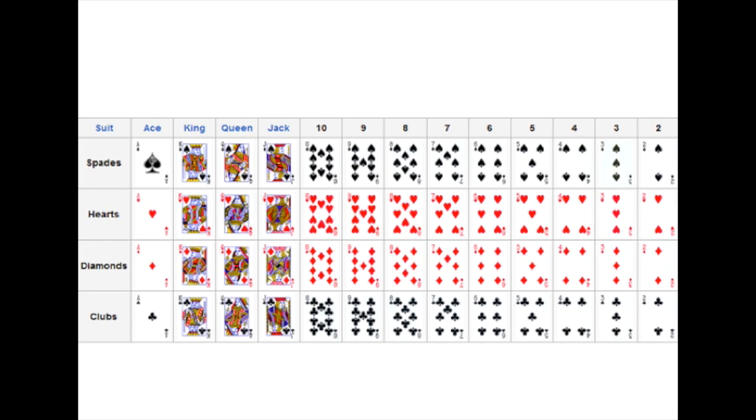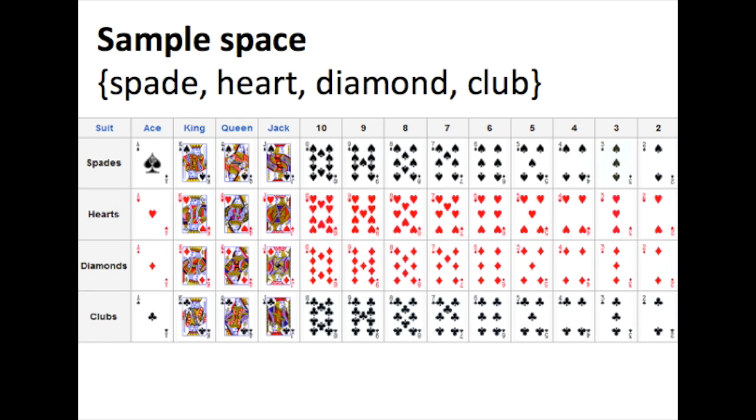Let's do an example involving playing cards now. In a standard 52 card deck, what is the probability that I would randomly select a spade? In this example, we are looking for the probability of pulling one particular suit. There are 4 suits in total, so the sample space would be defined as spade, heart, diamond, club.